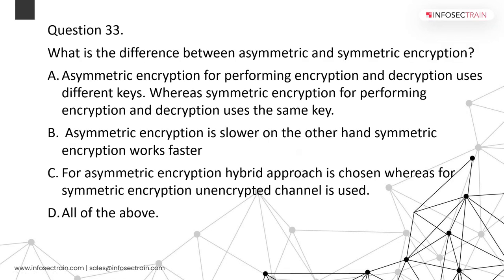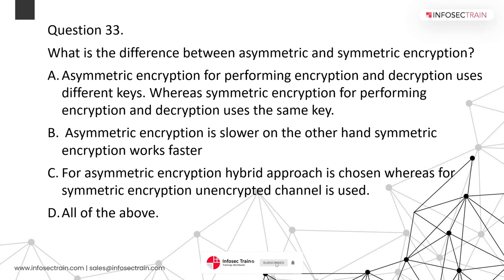What is the difference between asymmetric and symmetric encryption? Asymmetric encryption uses different keys for encryption and decryption, while symmetric encryption uses the same key. We don't commonly use asymmetric encryption in bulk because it's a slow process; we use symmetric encryption. Diffie-Hellman is introduced for key exchange. The answer is D — all of the above.